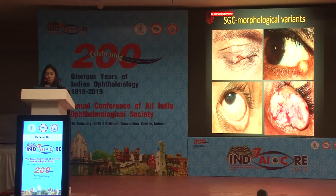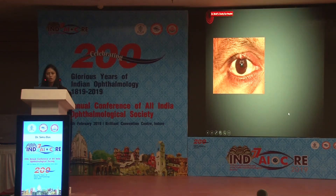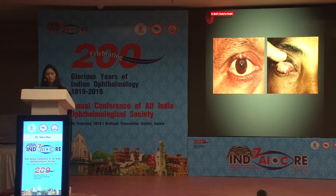The morphological variants of sebaceous gland carcinoma include the ulcerative variant, nodular variant — which most commonly mimics chalazion — diffuse eyelid thickening which mimics blepharoconjunctivitis, and placoid thickening. SGC can present as something very small and innocuous, looking like a lid margin nodule or a chalazion, or as a placoid thickening. Not all typical morphological variants are always apparent in patients.